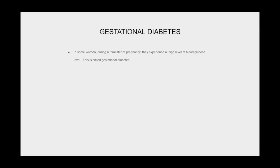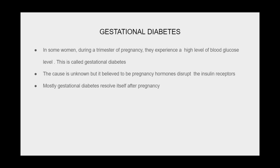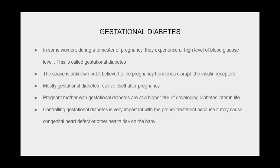Gestational diabetes occurs in some women during a trimester of pregnancy when they experience high blood glucose levels. The cause is unknown but is believed to involve pregnancy hormones disrupting insulin receptors. Gestational diabetes mostly resolves after pregnancy, but pregnant mothers with gestational diabetes are at higher risk of developing diabetes later in life. Controlling gestational diabetes is very important because it may cause congenital heart defects or other health risks to the baby.